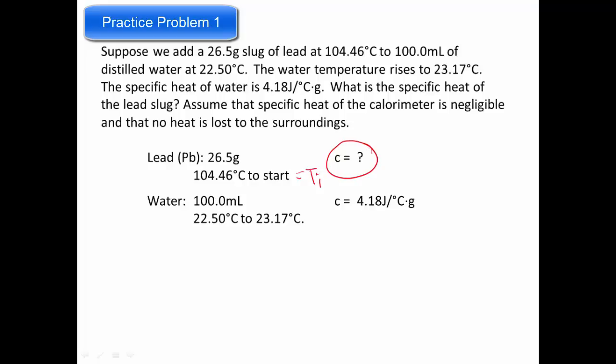Now like I talked about before, when we're trying to figure out our equation, we determine what is in our system that could either be absorbing energy or giving off energy. Each of those things needs its own Q term, its own heat flow. So we have the heat flow in the water plus the heat flow of the lead is equal to zero.